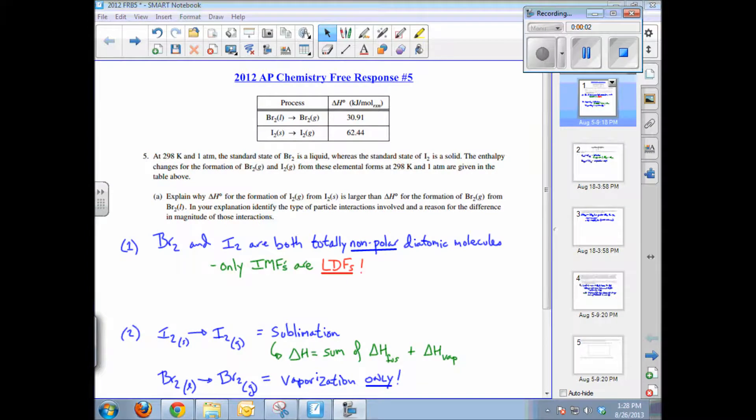This video tutorial will help solve free response question number five from the 2012 AP Chemistry exam. Let's read through the problem. At 298 K and one atmosphere, the standard state of bromine is a liquid, whereas the standard state of iodine is a solid, and the delta H for the formation of bromine and iodine gases from these elemental forms are given in the table above.